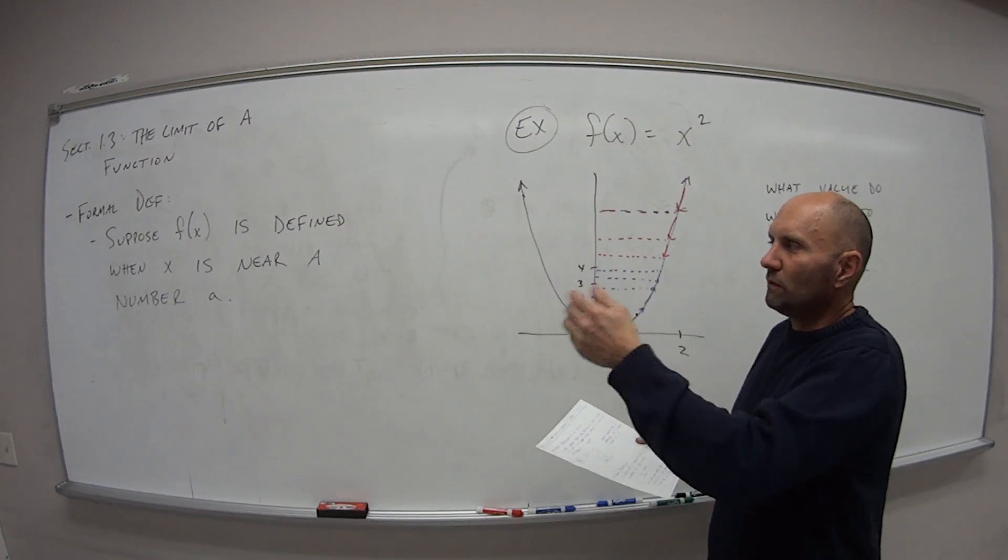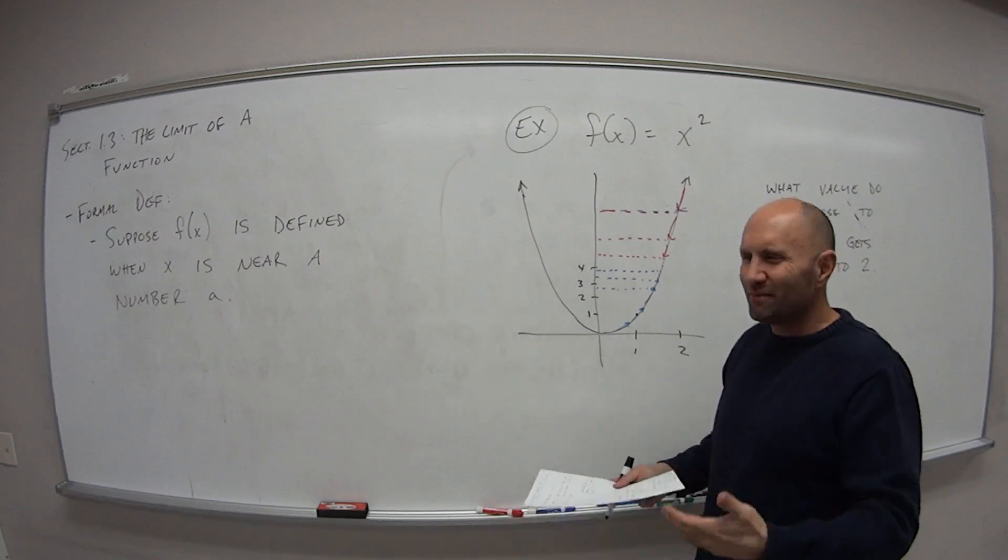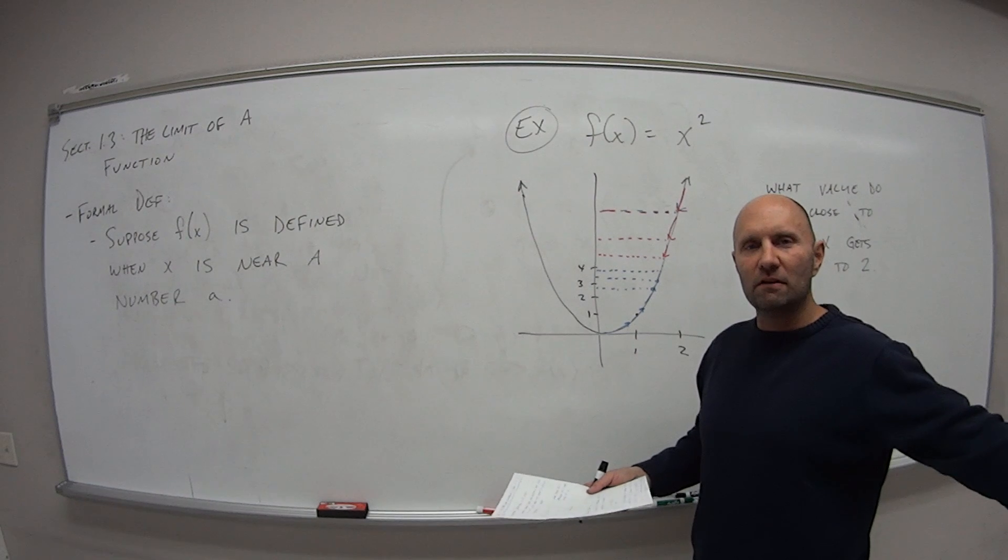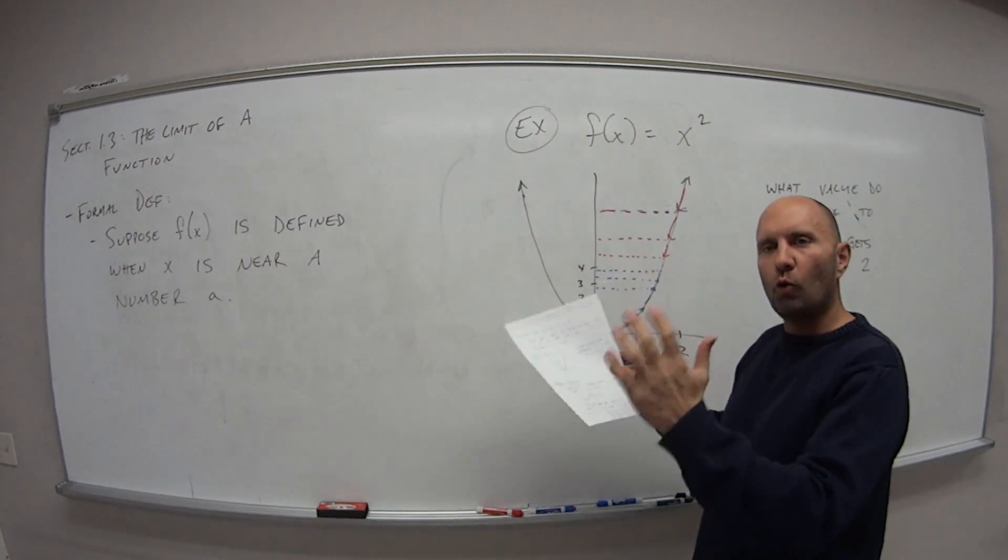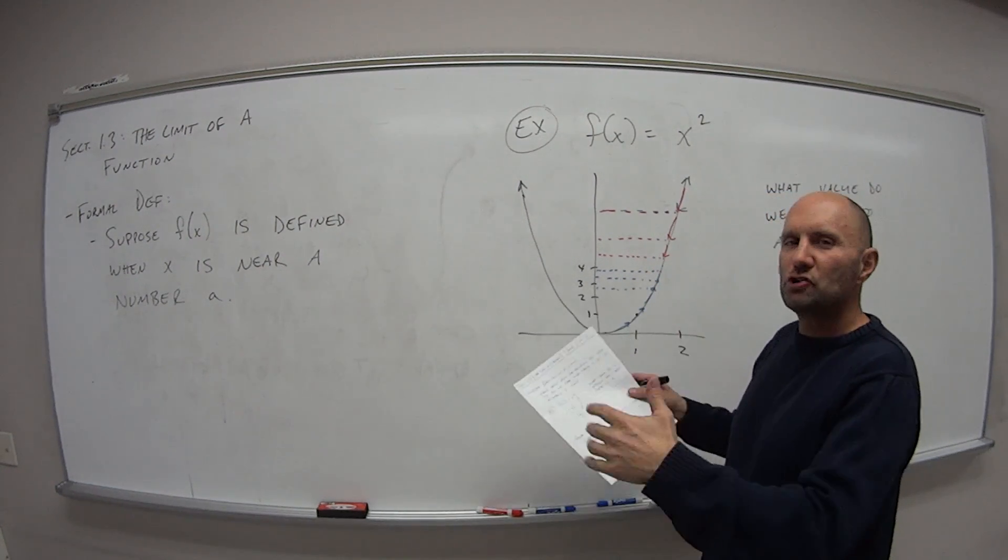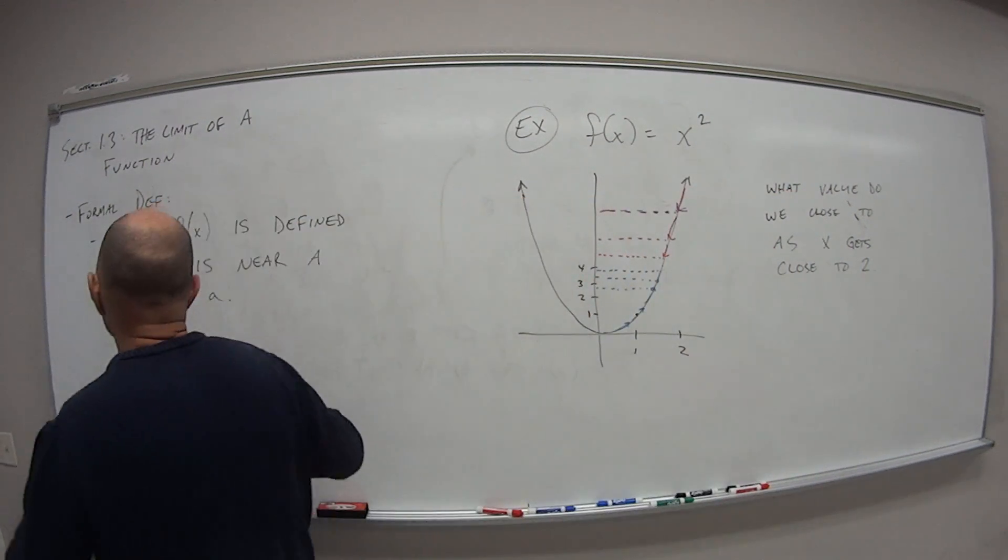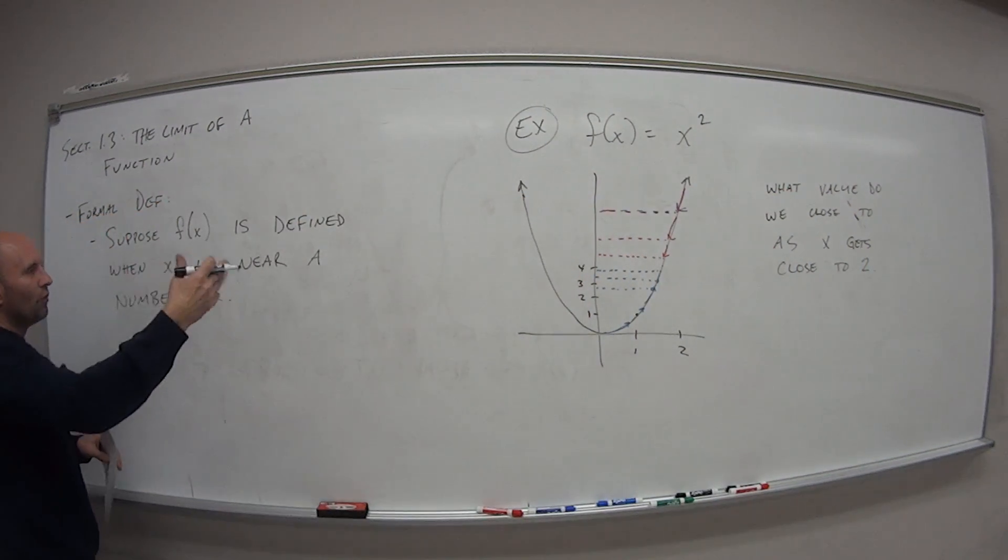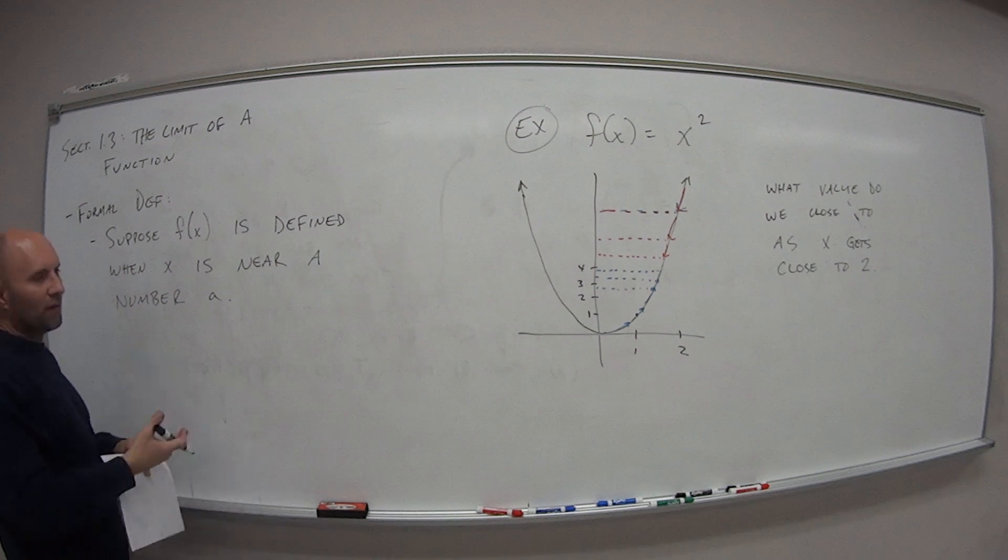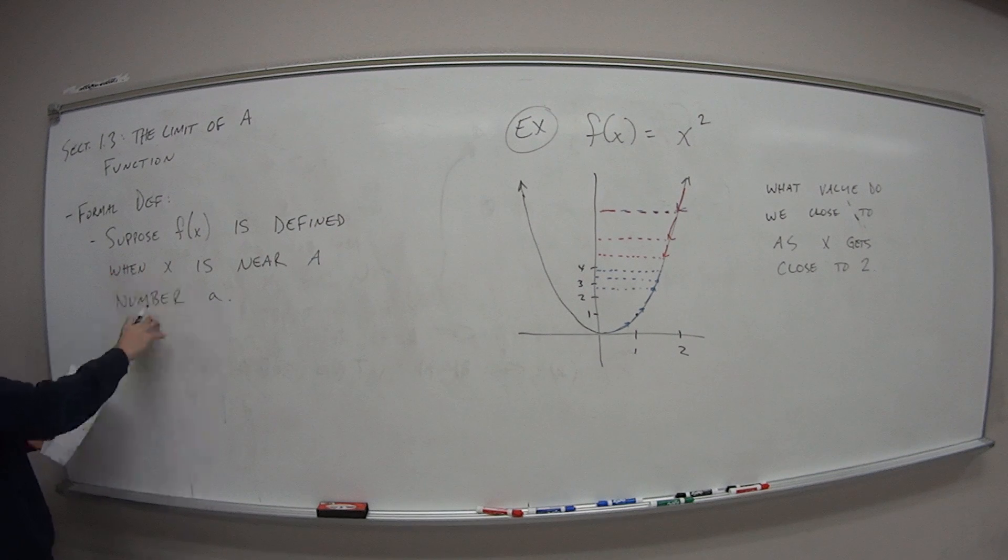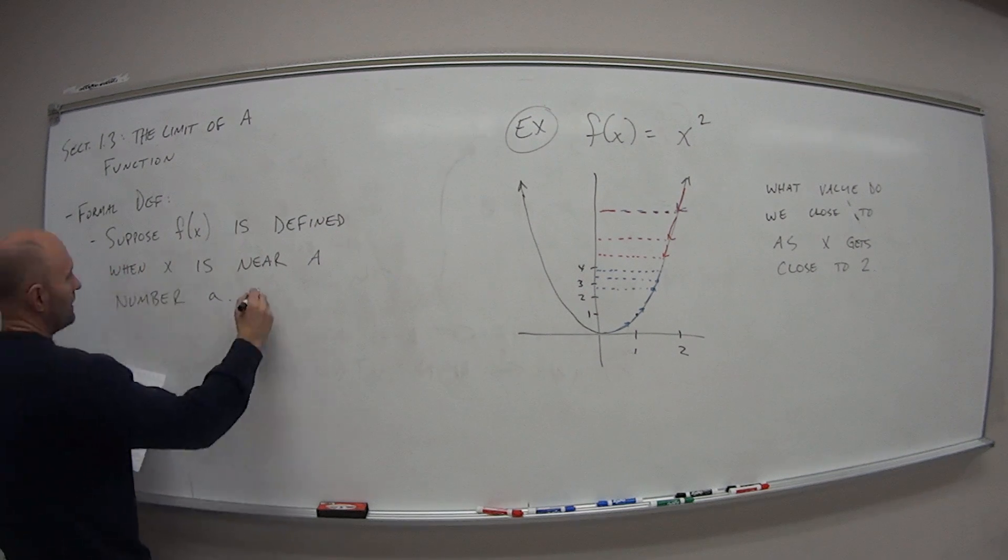So if we were to say, well, it gets near negative 10, that doesn't really make sense. The graph isn't even over in the negative area. So we're talking about only where the function has a specified domain and range. If there's no domain that's part of that function, then it's not defined at that point. But if it is defined near this number a, we write,